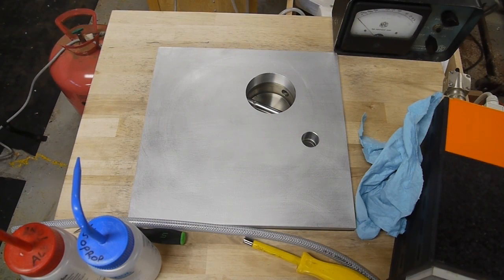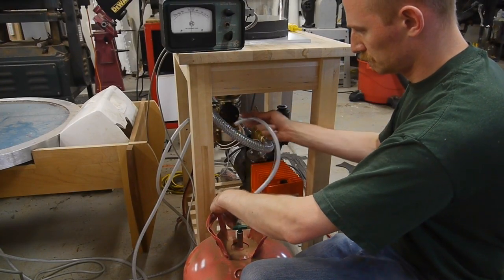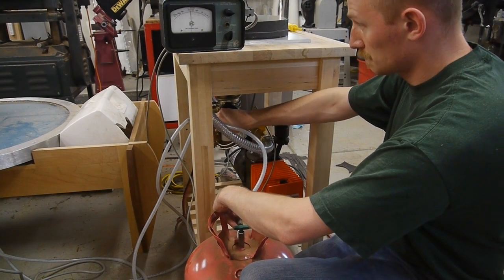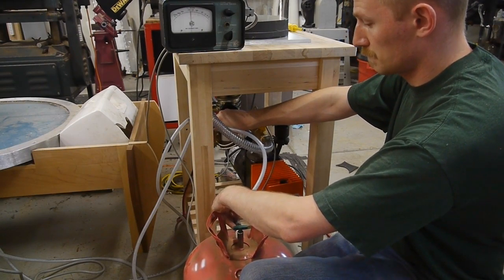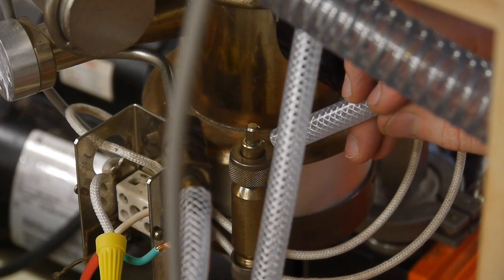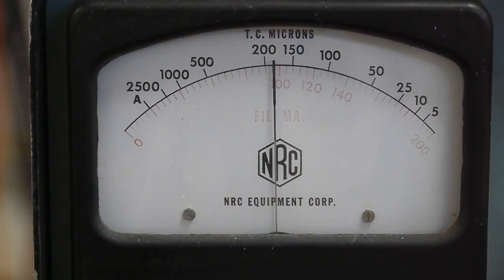One way you can test for this is using helium. I've got a helium tank and what you do is you just spray the helium around the outside of your vacuum setup and wherever helium gets into the system it will cause the vacuum gauge to dip.